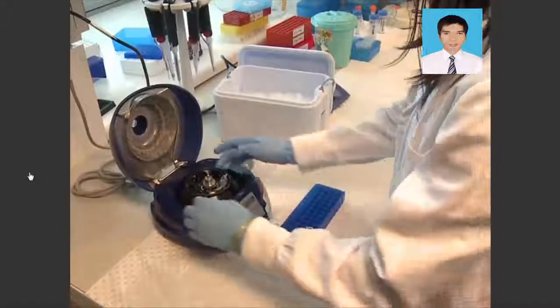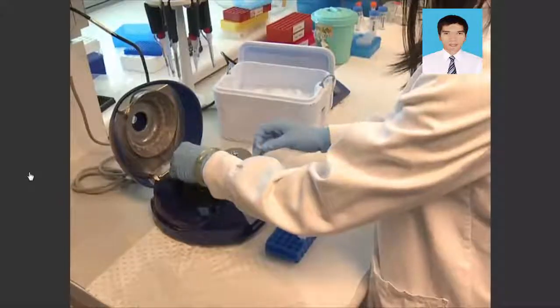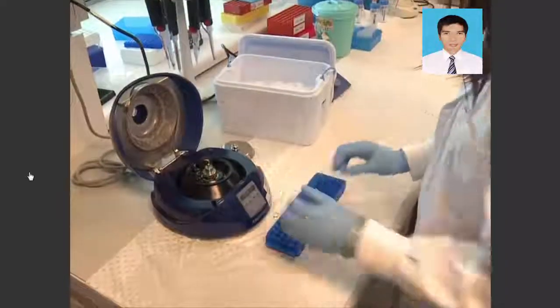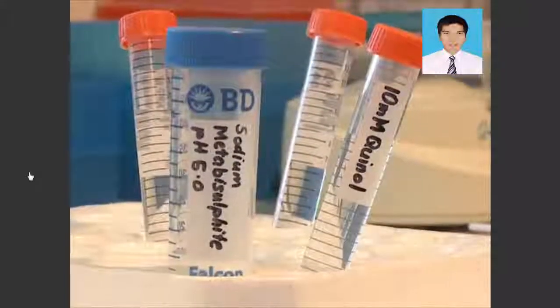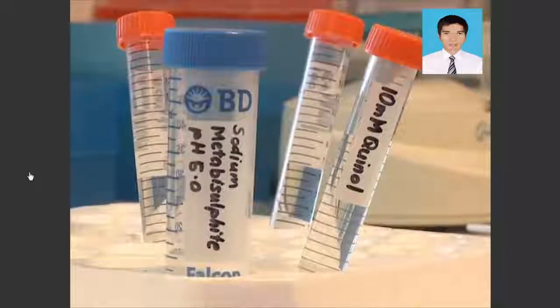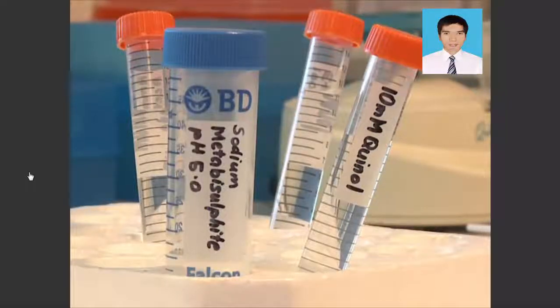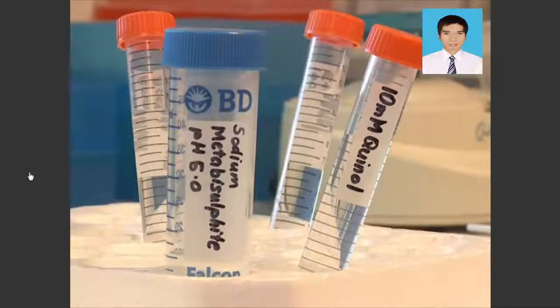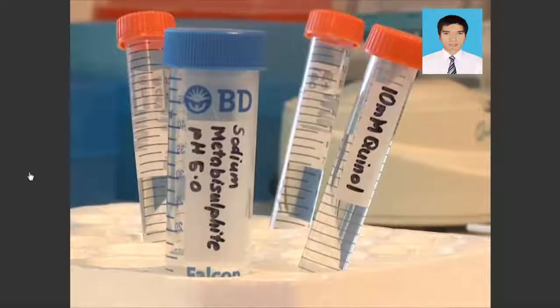Prior to the sulfonation and hydrolytic deamination reactions, prepare fresh solutions of 10 mM quinol and saturated sodium metabisulfite pH 5.0. As the sodium metabisulfite is a saturated solution, small lumps may remain undissolved.